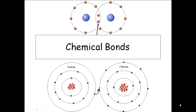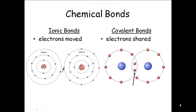There are two major types of chemical bonds. We've already talked about one — the ionic bond. In an ionic bond, electrons are physically moved. Electrons are transferred from one atom to another, so you create ions, and then you get that attraction between the positive ion and the negative ion.